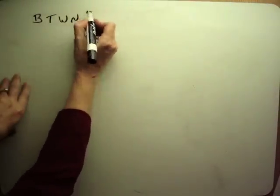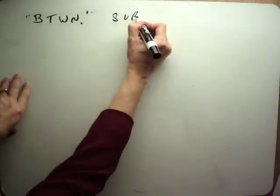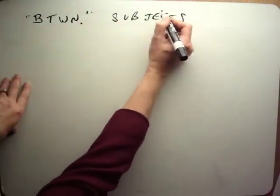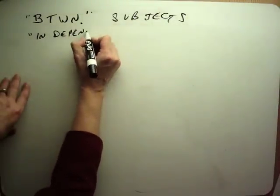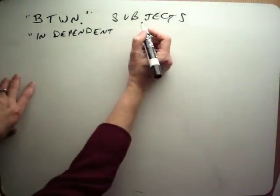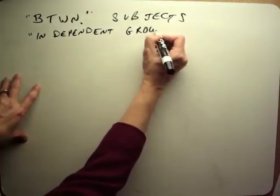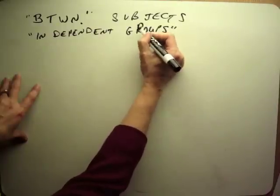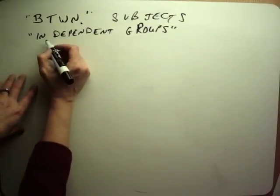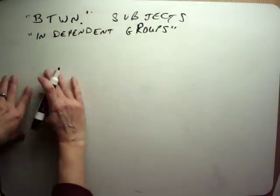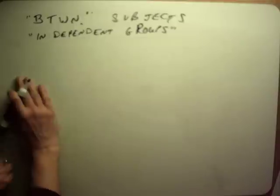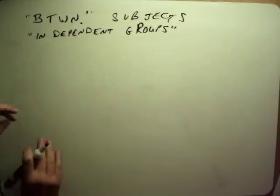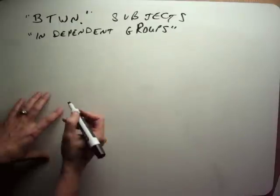When you do a between-subjects ANOVA, also known as independent groups ANOVA — and we're not talking about an IV or independent variable here; this is the name of the design of the study. The reason they call them independent groups is each group is completely different and they don't really share anything except the fact that they're all in the same study, and you treat everybody identically except for the treatment.